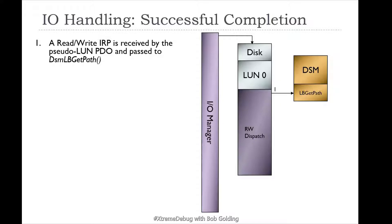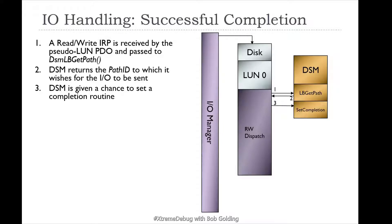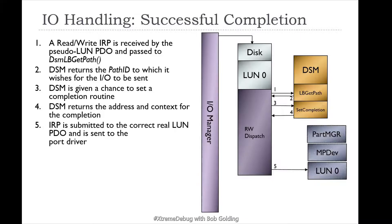The read/write IRP is received by the pseudo-LUN PDO and is passed to the DSM LB get path callback, which enforces the load balancing policy. The DSM returns the path ID based on the load balancing policy it wishes for the IO to be sent. The DSM is also given a chance to set a completion routine — the set completion callback in the DSM is called by MPIO, and the DSM returns the address and context for the completion.